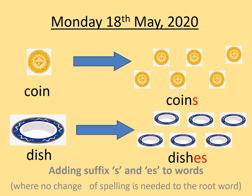Good morning everybody! This is Gopi here again with another super suffix challenge for our Monday's Mornings GPS lesson. Today we are going to be learning how to add s and es to words. For example, coin will become coins and dish becomes dishes.